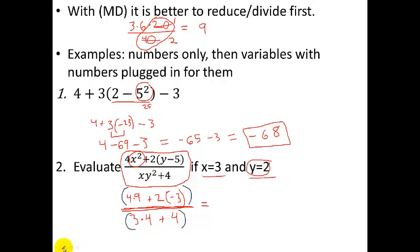So let's go back to red here. Four times nine, there's thirty-six right here. Two times negative three is negative six, so plus a negative six becomes minus six. In the denominator, three times four is twelve, twelve plus four is sixteen. Okay, if we subtract thirty-six minus six, we get thirty divided by sixteen.